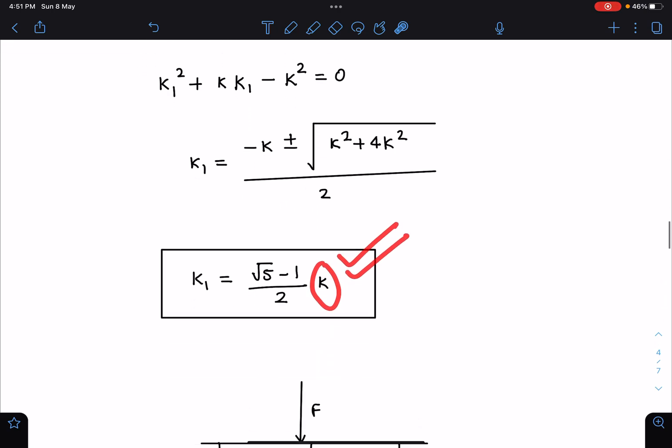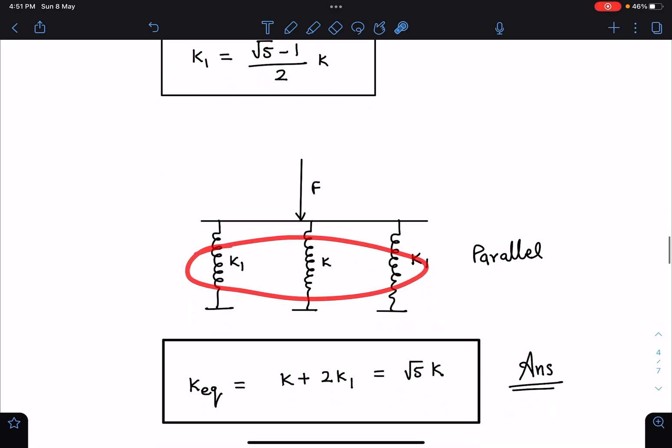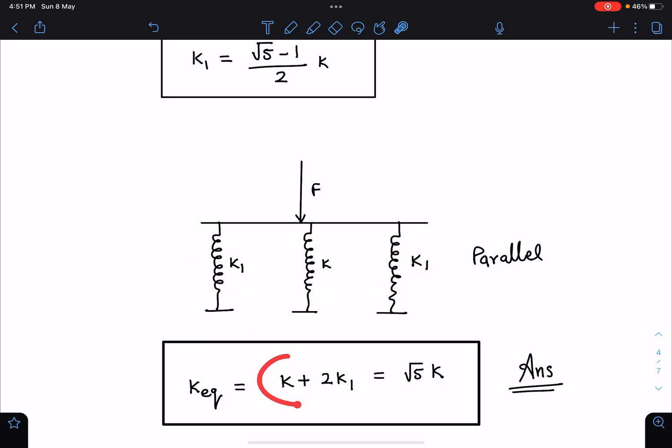Now the actual situation will become something like this: the middle one and this side k equivalent and this side k equivalent. You can find out that these three are in parallel, so overall my answer is going to be k plus 2k1, which is going to give me